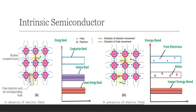In pure form, the valence shell carries an equal number of holes and electrons. The outermost shell of both silicon and germanium have four electrons — that is, four valence electrons will be there in the outermost shell of both silicon and germanium. As shown in the diagram of silicon, if you see the outermost shell, there will be four electrons.